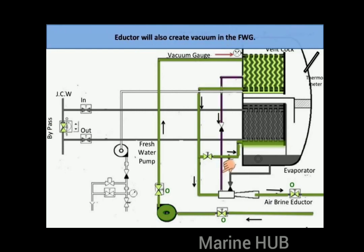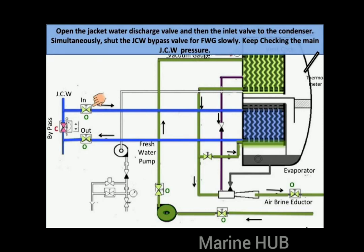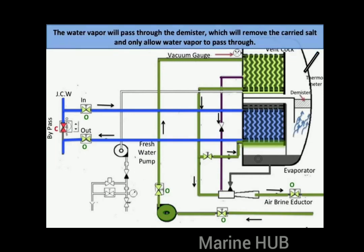The inductor will create the necessary vacuum in the fresh water generator. Open the jacket water discharge valve and then the inlet valve to the condenser. Simultaneously shut the jacket water bypass valve for the generator, while slowly checking the main jacket water pressure. Water vapor will be created by heating from the jacket water temperature, as at low pressure water boils at lower than the normal boiling temperature. The generated water vapor will pass through the demister.